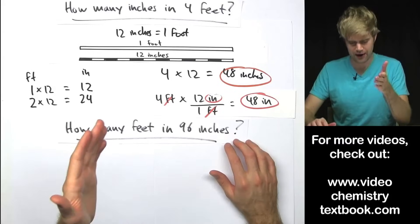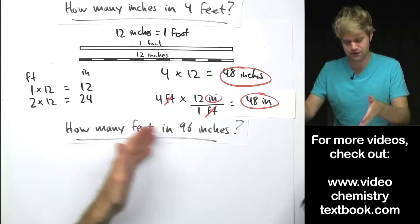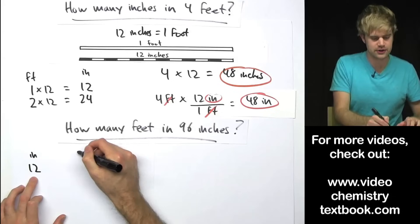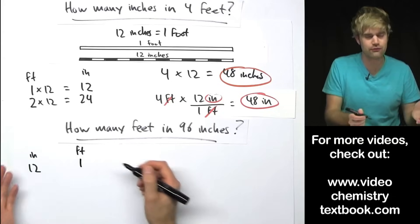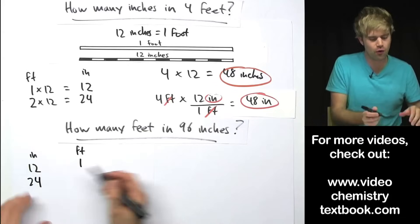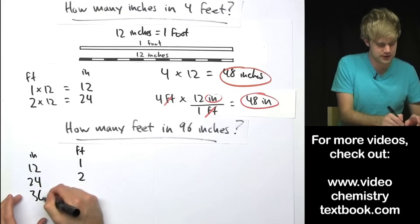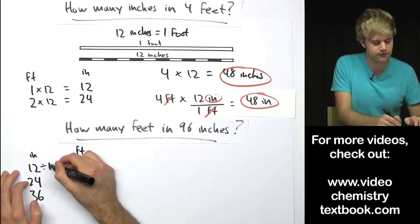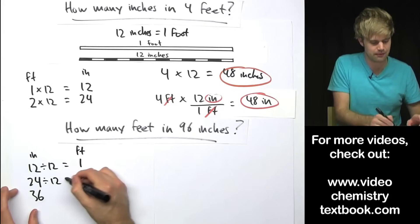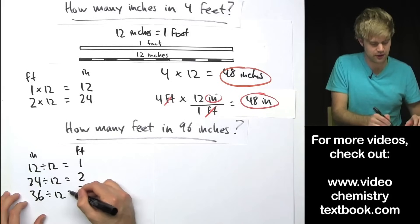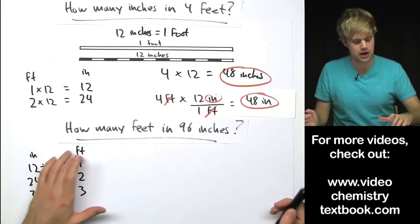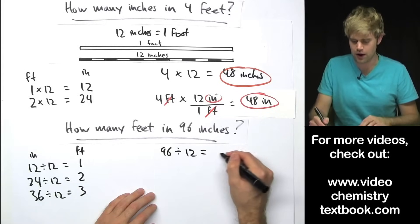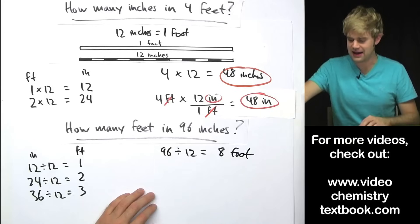Here we're going from inches to feet. How many feet are in 96 inches? Let's think about this the same way. If I had 12 inches, that would be 1 foot because there are 12 inches in a foot. If I had 24 inches, I'd have 2 feet. If I had 36, I'd have 3 feet. The math I'm doing in this case is division — I'm taking my 12 inches and dividing by 12 to get 1. 24 divided by 12 equals 2. 36 divided by 12 equals 3. So you have inches, you want to get feet, you divide by 12. So with 96 inches, I'll divide by 12 and that gives me 8 feet.